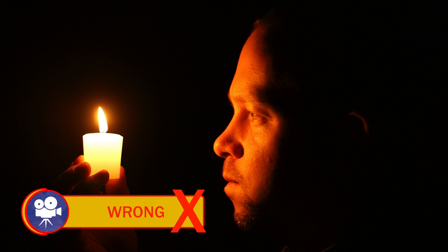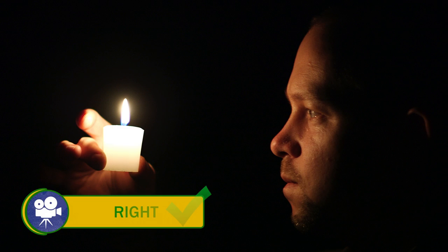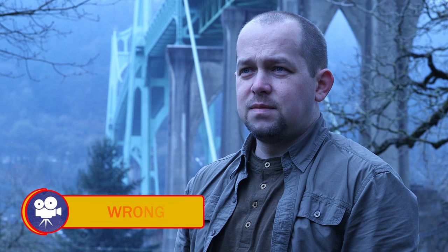So if we're shooting with candlelight, that light's going to appear more warm or orange if we don't correctly white balance our camera. If we shoot outside and we don't correctly white balance, then that image is going to appear more cool or blue.